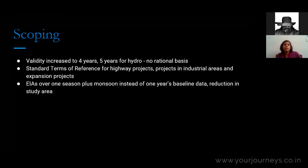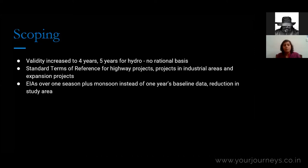EIAs were typically to be conducted over a year, where one year's baseline data was collected from the study area. India is an immensely biodiverse country with many migrating species in winter and summer, so it was taking all of this into consideration that EIAs were conducted over a year's time, with people actually sent to the field to collect data. The 2020 draft changes this to say one season plus monsoon is when data will be collected, basing the EIA report on inadequate, non-comprehensive data.